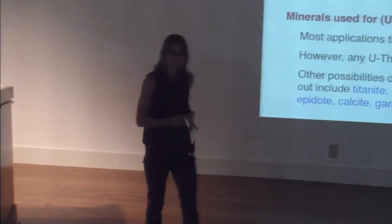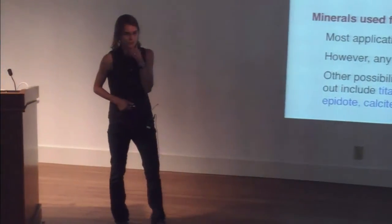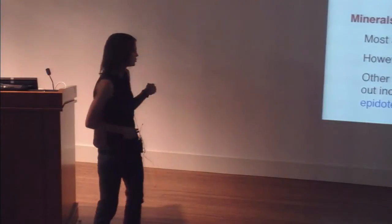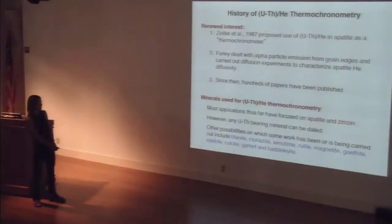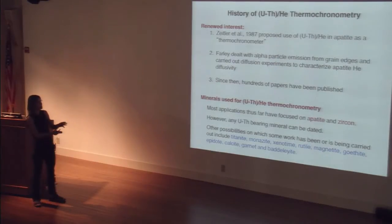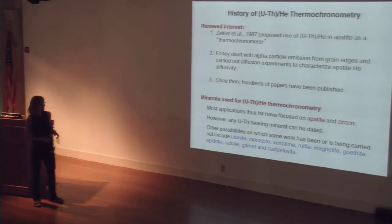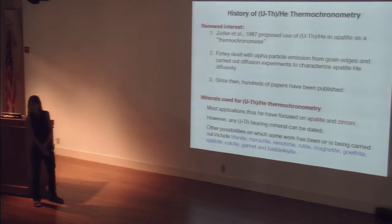On closure temperatures of these different minerals: zircon's closure temperature in the helium system is on the order of 180 degrees C. Many minerals — zircon, titanite, monazite, rutile, magnetite — have closure temperatures between about 180 and 250 degrees C, so many are similar. Some we just don't know. Goethite may be potentially really low, like 30 degrees C.